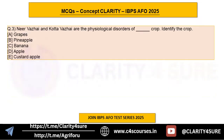Question number three: near vizai and kota vizai are the physiological disorders of which crop group? Options are grapes, pineapple, banana, apple, and custard apple. About 10 or 11 questions will be bonus questions you can answer in a second, but always be very careful while marking answers so you don't make mistakes on simple questions.